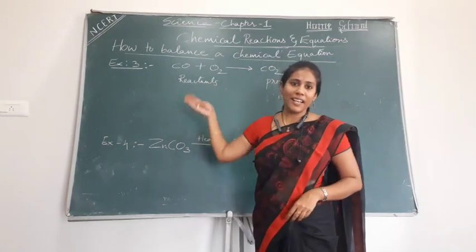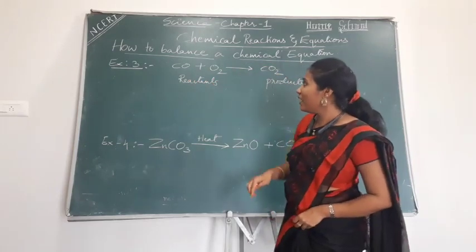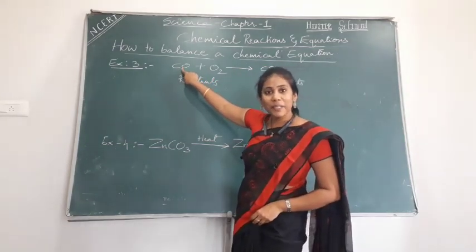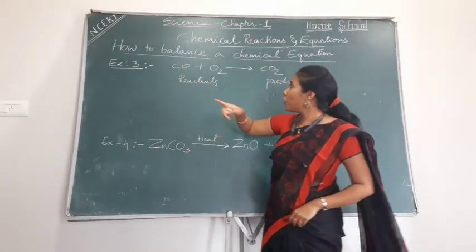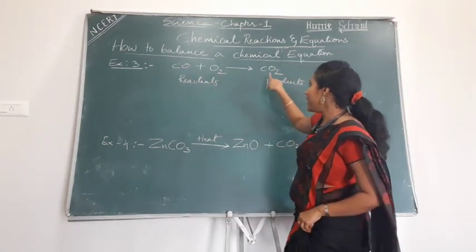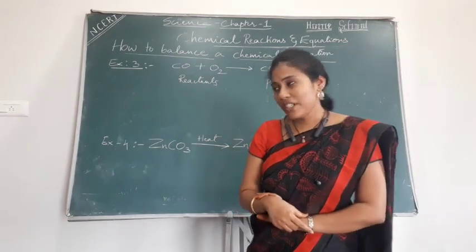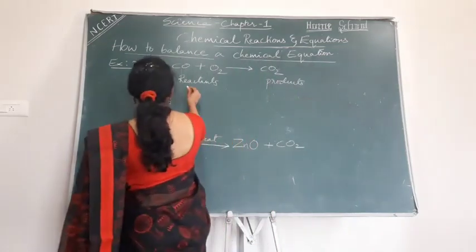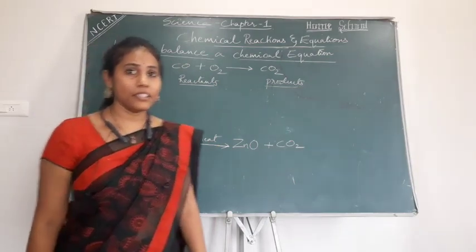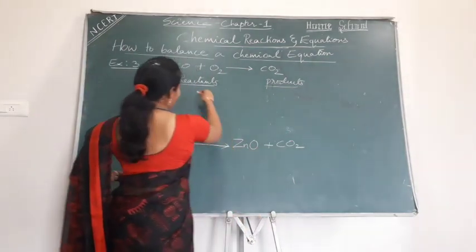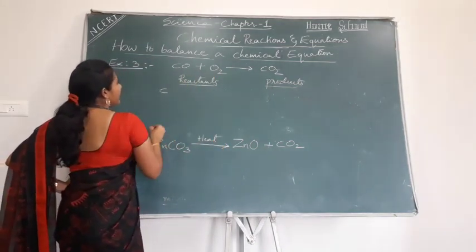Let's go for more examples. Here is Example 3: CO, which is carbon monoxide, reacting with oxygen and producing carbon dioxide. This is a very simple chemical equation. Check whether it is balanced or not — if not, you should start balancing it. You go for a small table.